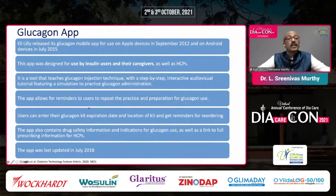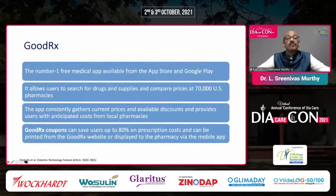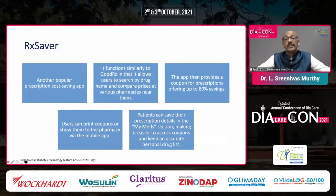The Glucovan app from Lilly, released in 2015, provides visual and audio-visual education with slides on how to prepare and what precautions to take regarding Glucagon. Prescription cost-saving apps like GoodRx and RxSaver — the number one free medical app on the App Store — compare drug prices at 70,000 US pharmacies and provide coupons, encouraging patients to buy medications and improving adherence.